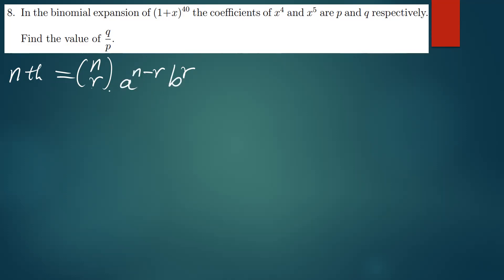So the nth term is given by nCr times a^(n-r) times b^r. We've been given that the coefficients of x^4 and x^5 are p and q respectively. Now how do we solve for p and q?